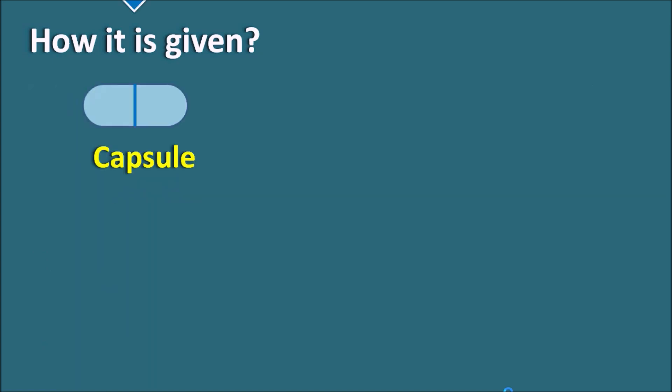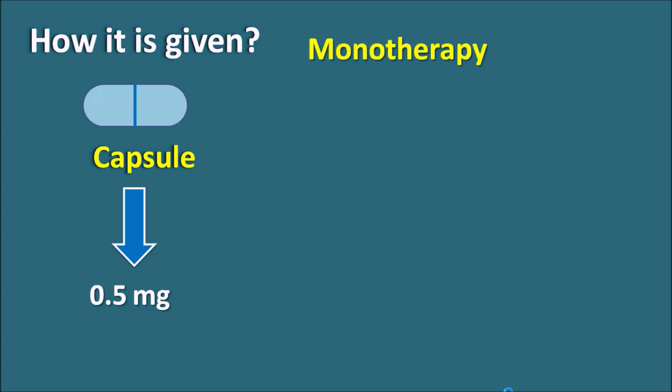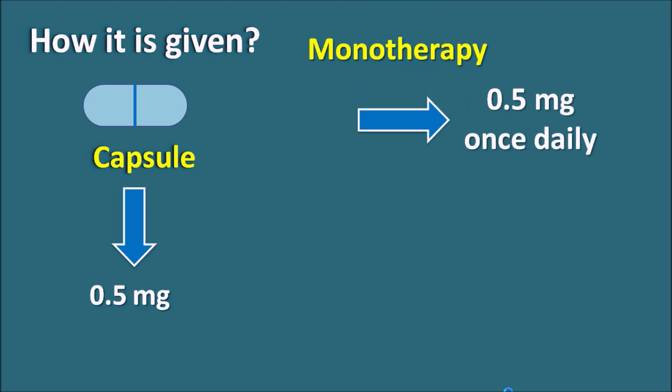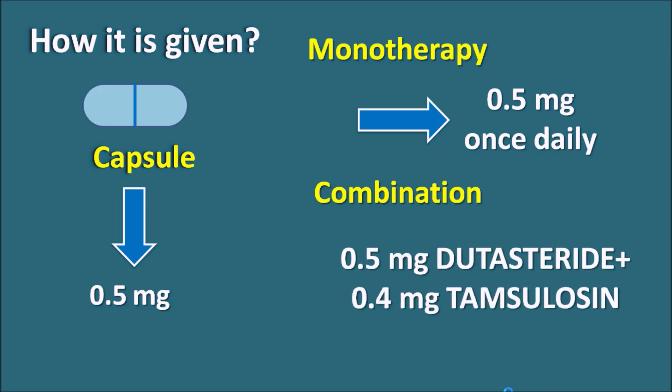Dutasteride is given as a capsule at a dose of 0.5 mg. For monotherapy, the dose is 0.5 mg once daily. For combination therapy with alpha blockers, it is given as 0.5 mg dutasteride and 0.4 mg tamsulosin, also once daily.